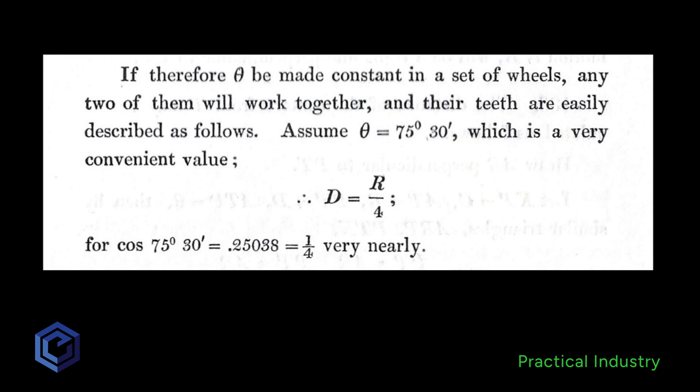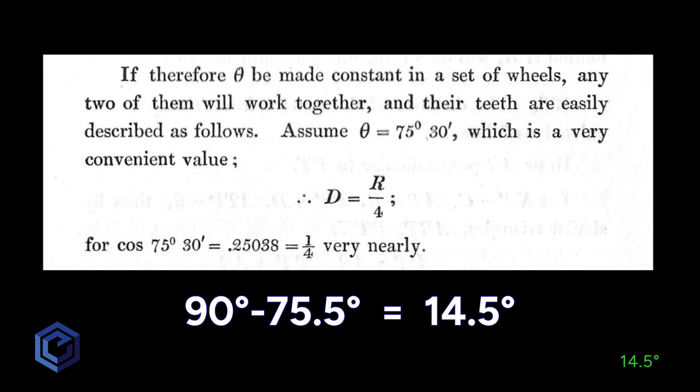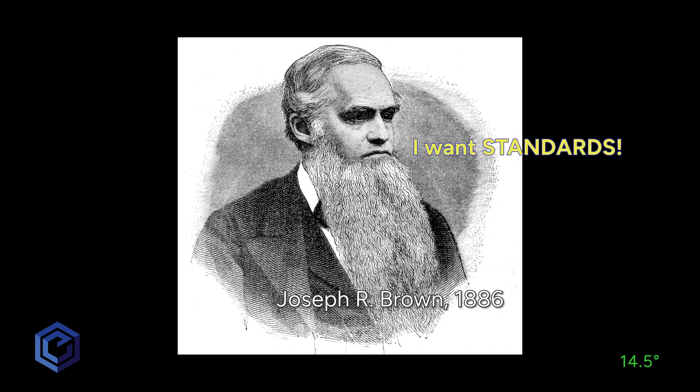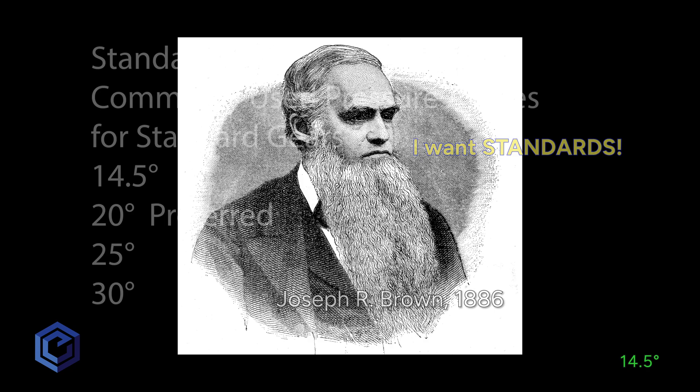Willis defined the 14.5 degree pressure angle right here in his textbook from 1841, and he did it in concert with a guy named Brown — the Brown of Brown and Sharpe. Anybody that knows very superior machine tools, hand tools, and measurement and metrology tools knows Brown and Sharpe. They were very early in industry and very much dominated the scene.